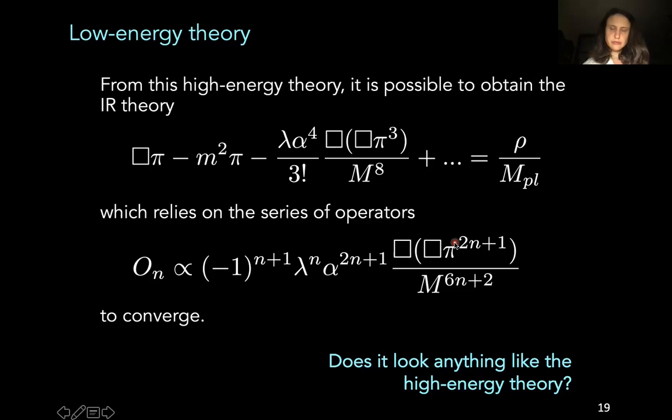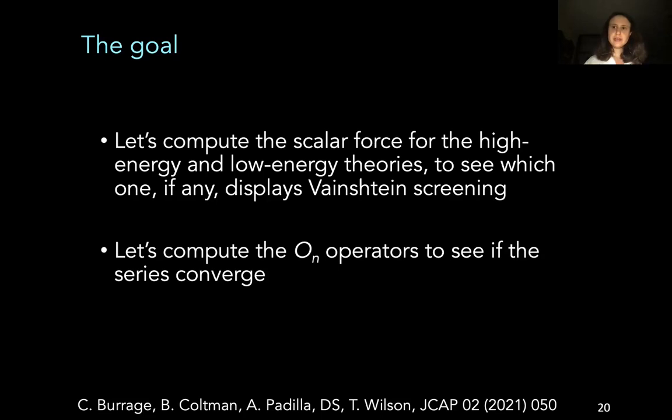So then this is the goal of this work. Let's look at the low energy theory and the UV complete theory. Let's see if they look anything like each other. And let's see which one, if any, displays Vainshtein screening. And let's also compute this tower of operators to see if the series converges, if the perturbative approach was appropriate in the first place.